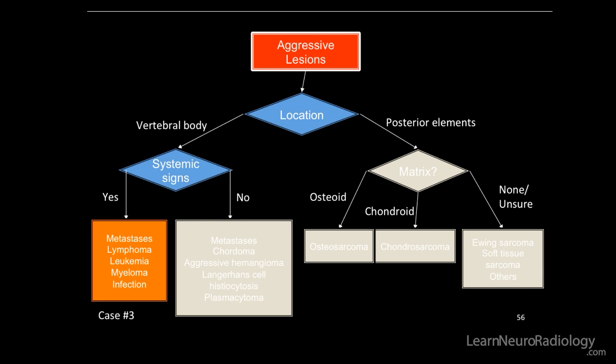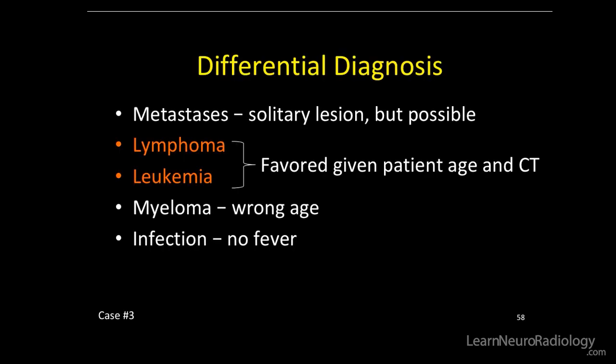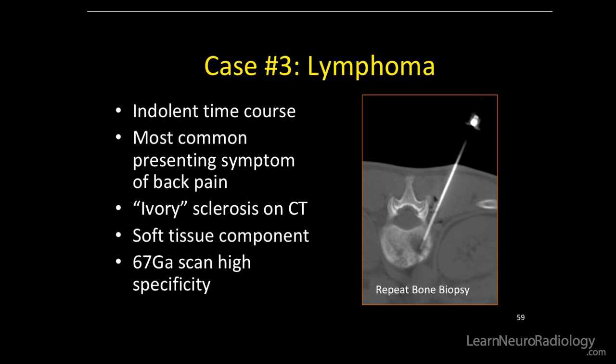Here's our differential, similar to the first case of tuberculosis. Do we think it's an infection this time? Probably not — no fever. Is it a metastasis? Well, it's solitary, but anything's possible. Probably not myeloma — wrong age group, this was a young person. So what we're left with is most likely lymphoma or leukemia. This was re-biopsied and it was a case of lymphoma, happening over an indolent time course.